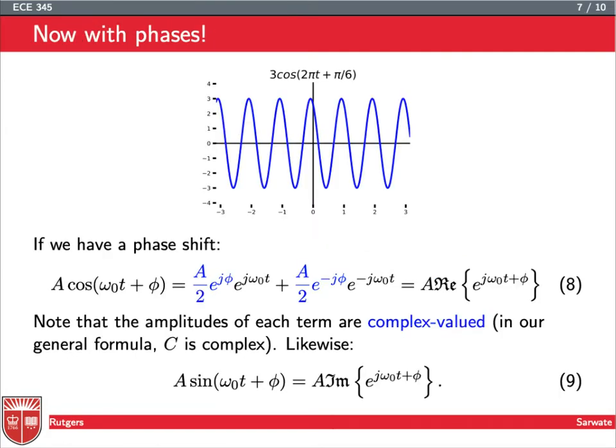So, what if we have that phase shift? Because before we were taking C to be a constant, a real constant. So, what if we have the phase shift? So, if I want to know what is A cosine omega naught t plus phi, we know that it's the real part of e to the j omega naught t plus phi. And if you kind of write it out, if you Eulerize this thing, you can see you get these two complex coefficients times these two complex exponentials. So, cosine is just the sum of two complex exponentials as before. The amplitudes of each term here are complex valued. So, if you want to get the imaginary part of this e to the j omega naught t plus phi to get the sine component, you get a similar looking expression as this A over 2 e to the j phi business in equation 8. And it might be useful for you to try to write that down to make sure you understand what's going on here.